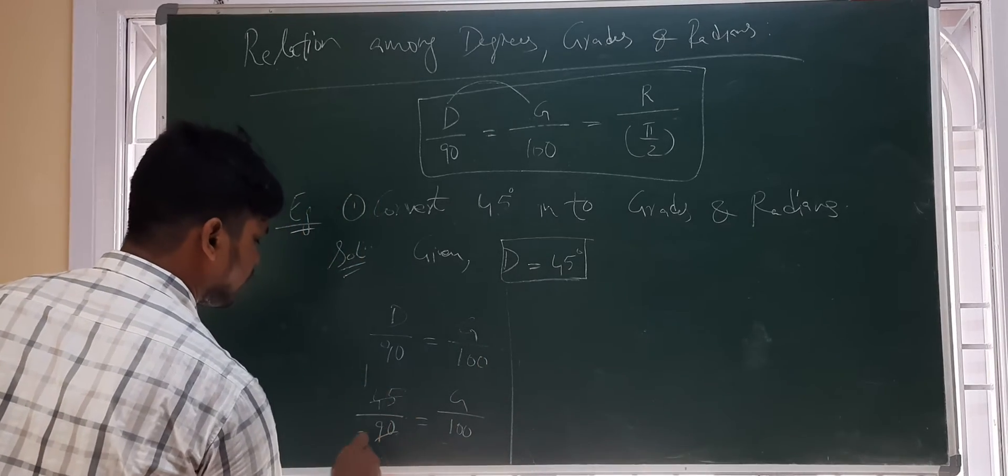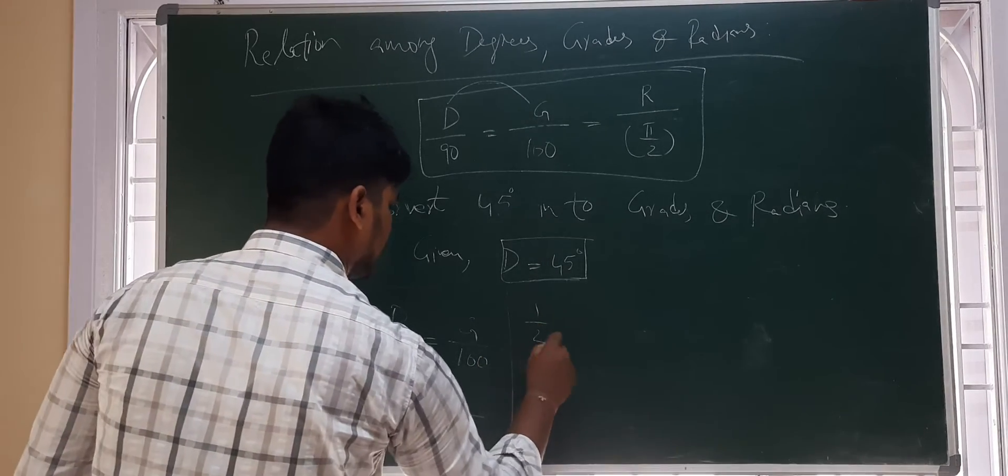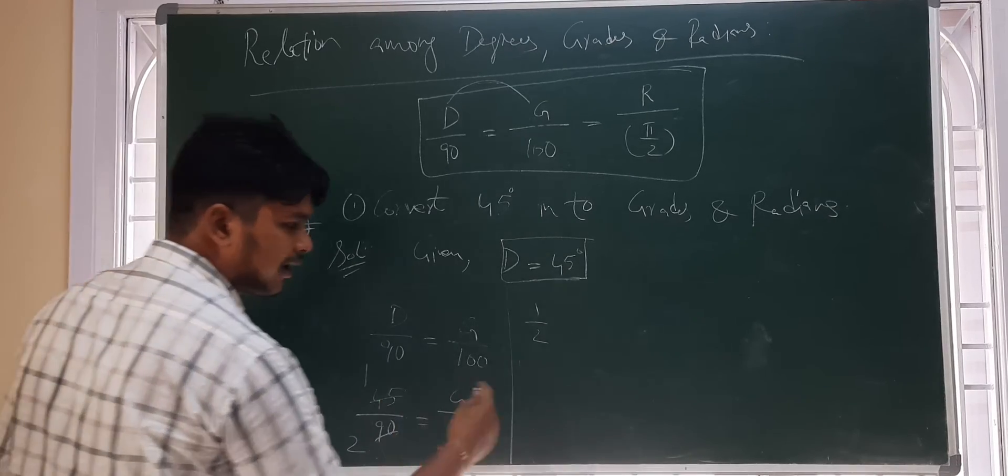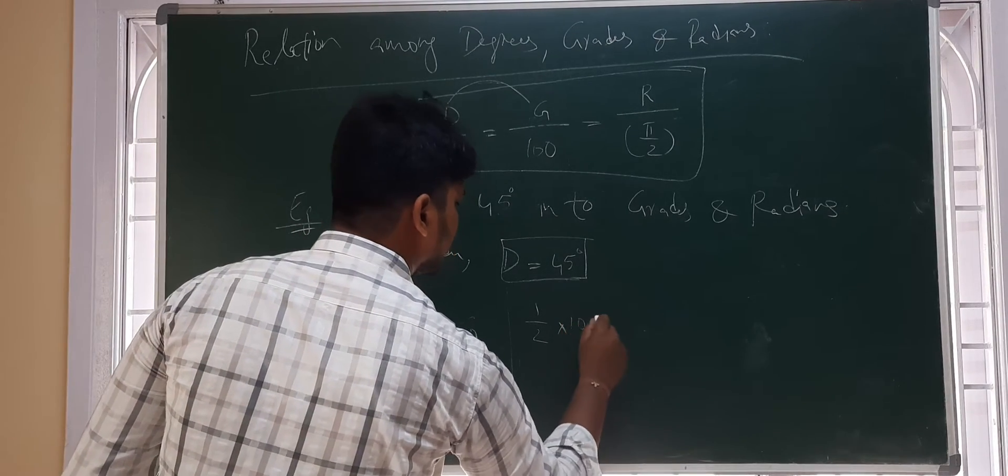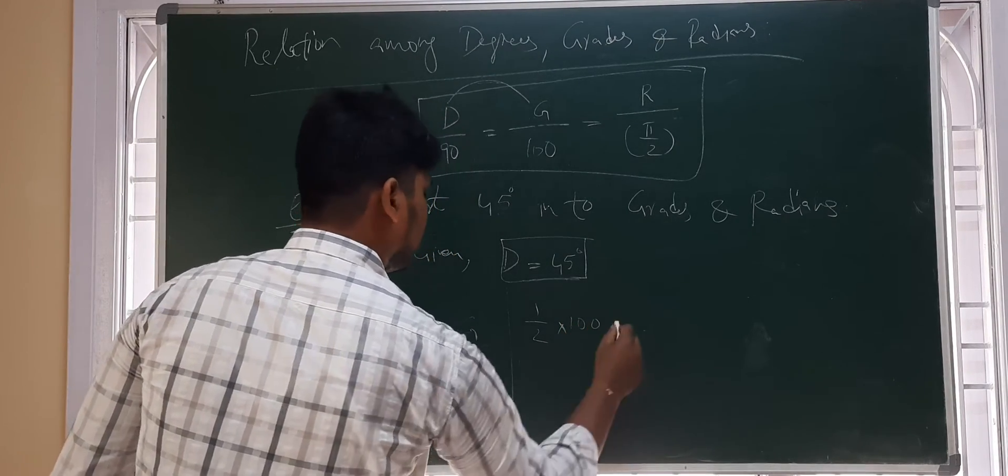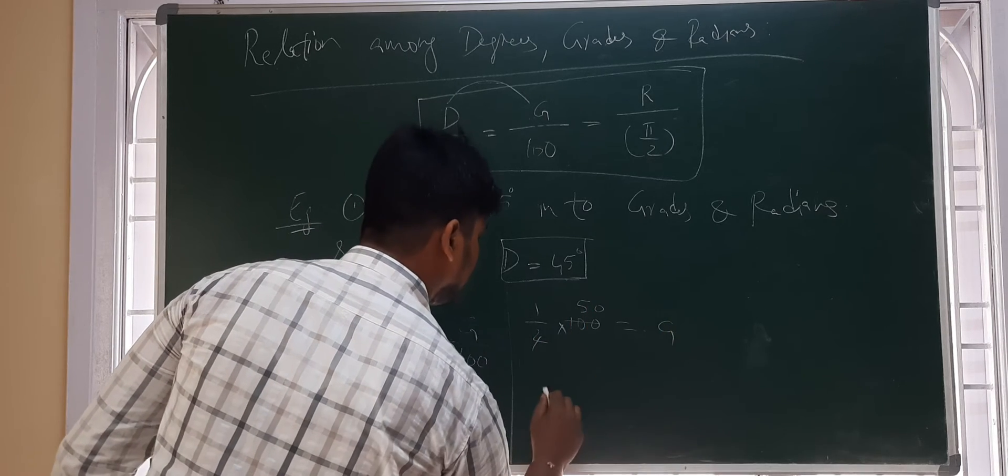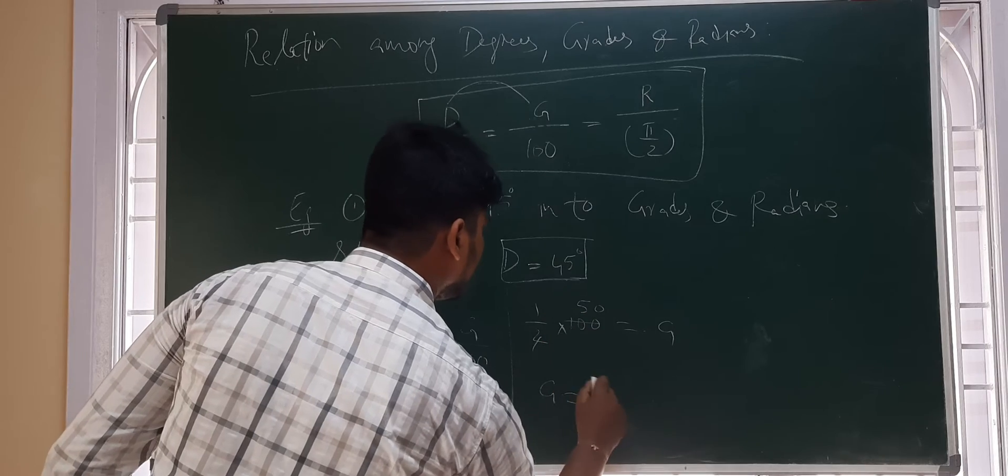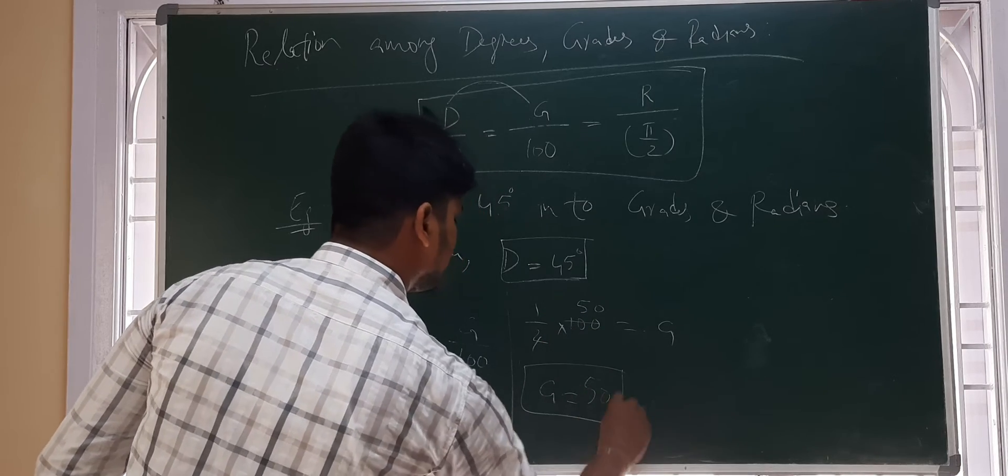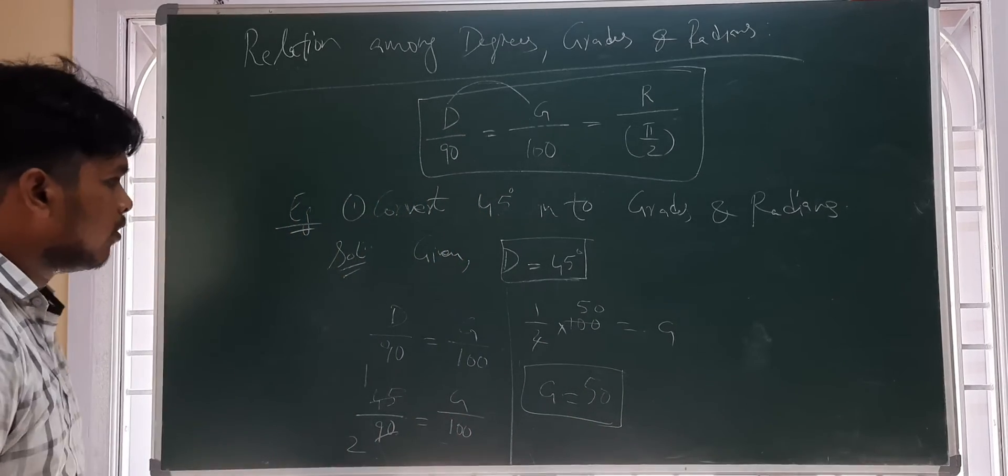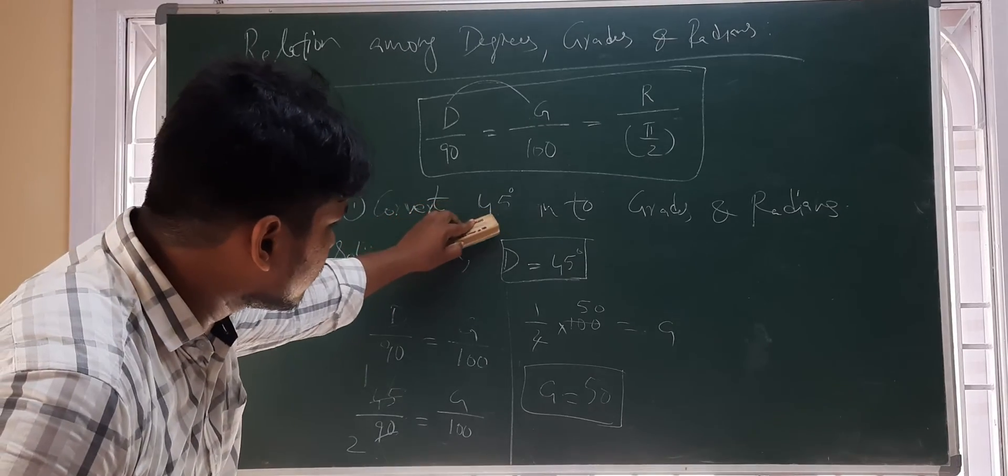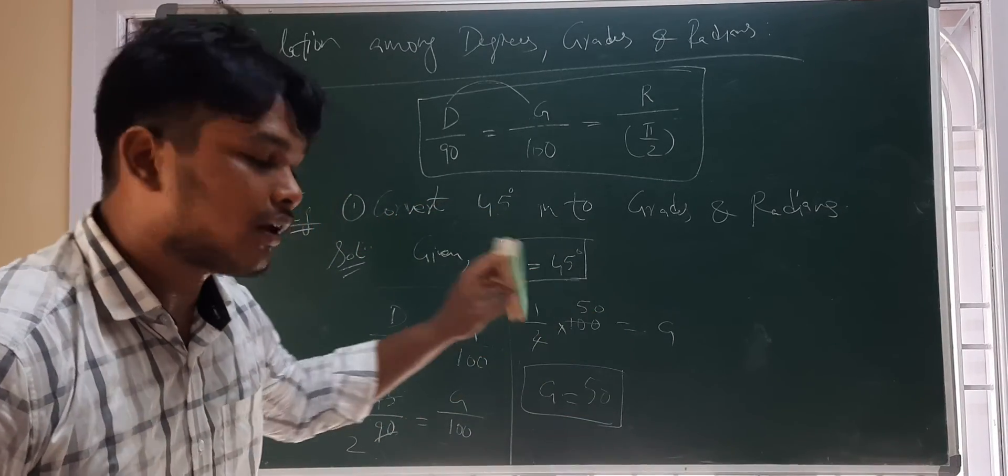45 by 90, 1 by 2. By 100 if it goes to RHS, it becomes into 100. 1 into 50, 50. So, G is 50 grades. So, 45 degrees is equal to 50 grades.